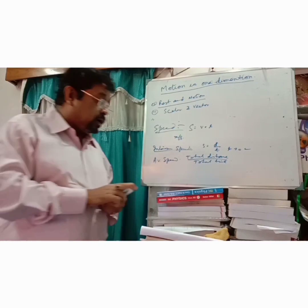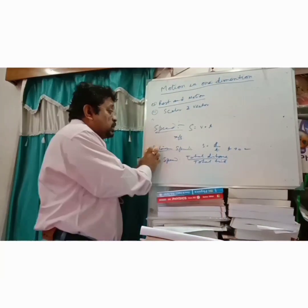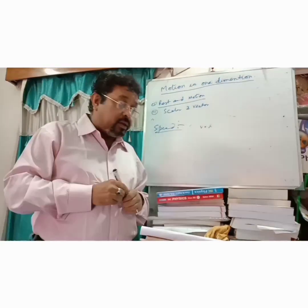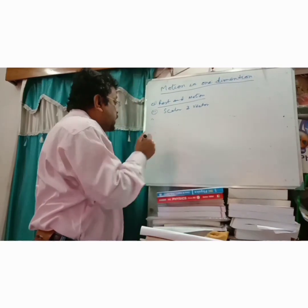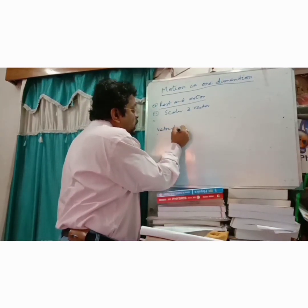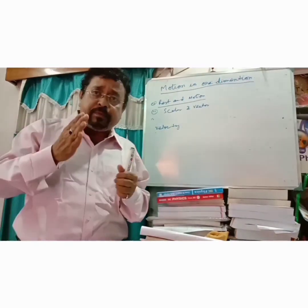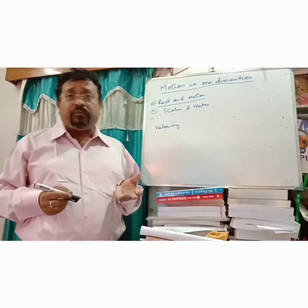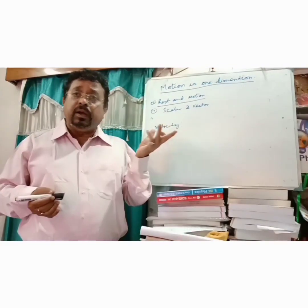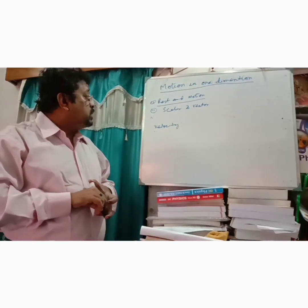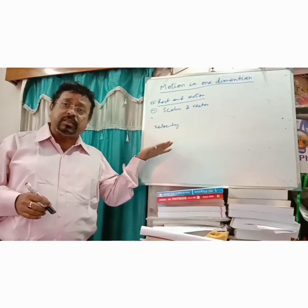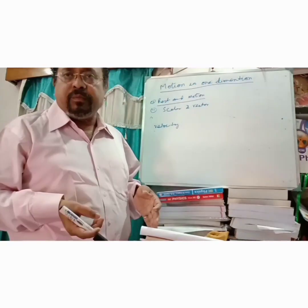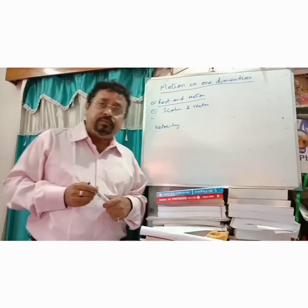Now, what is velocity? Velocity is the rate of change of displacement in a particular direction. Displacement divided by time is called velocity. The unit of velocity and speed are both meter per second, but velocity is a vector quantity so you must give the direction. Similarly, instantaneous velocity is the displacement covered in a very small interval of time.